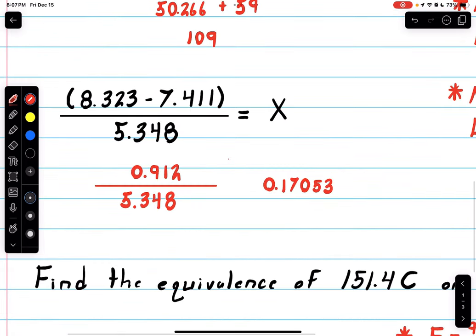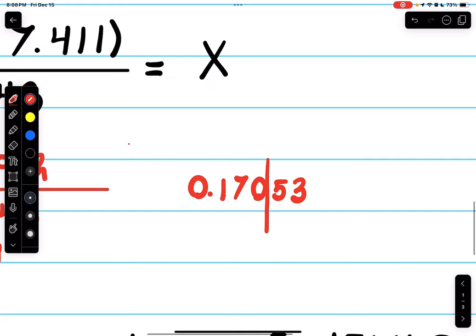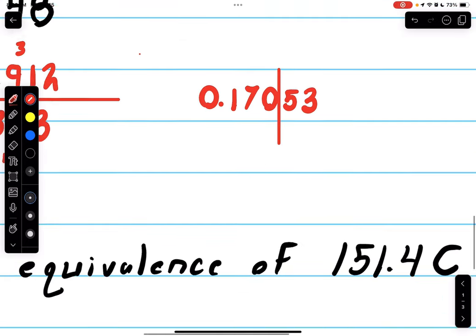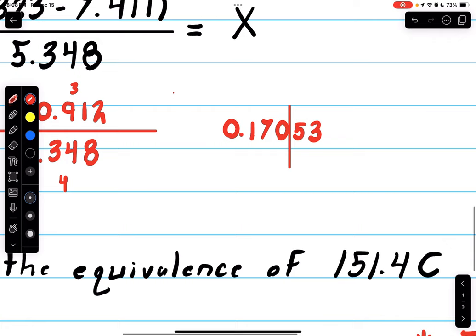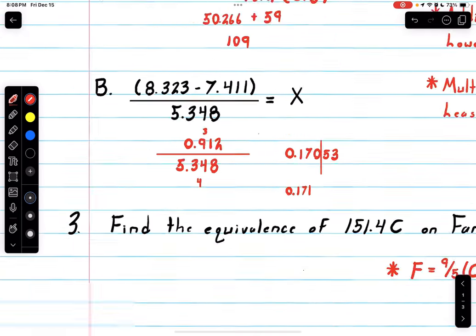This comes out to 0.17053 and it continues on. Remember we want to go with multiplying and dividing the least amount of sig figs. We have three here and four here, so we want three sig figs. If we go to our answer, we cut it off at three sig figs, rounding. We round to 0.171, and that's your answer.